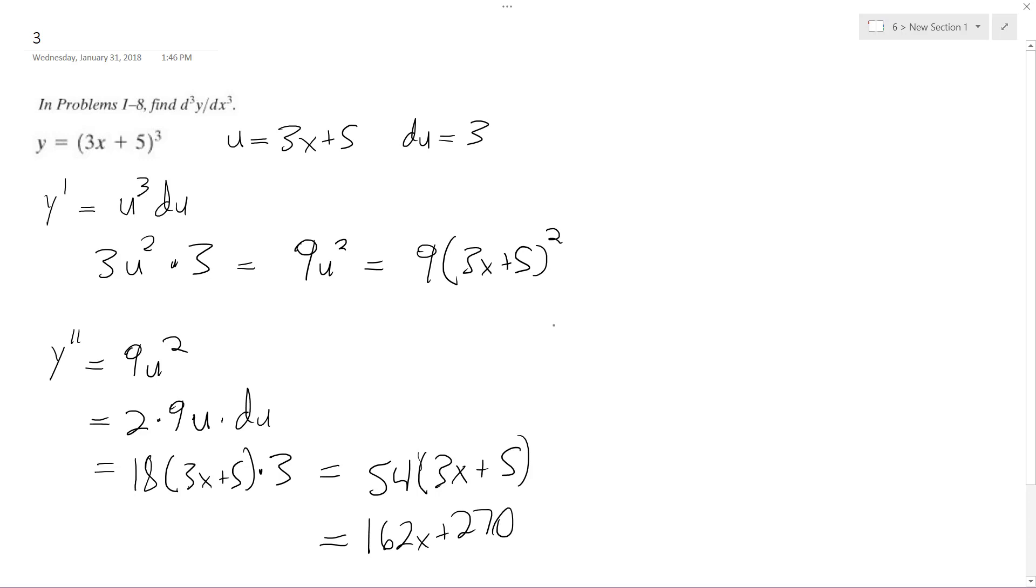Finally, the third derivative is going to be 54u. So you take the derivative of that, and what you end up with is just du. There's no u beyond that, so it just becomes 54.